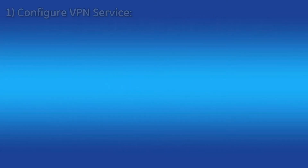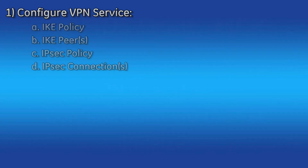Configuring IPsec on the Orbit MCR consists of the following: configuring the VPN service, which includes the IKE policy, IKE peers, IPsec policy, and IPsec connections.